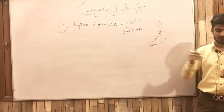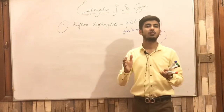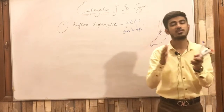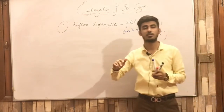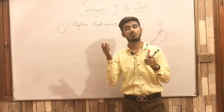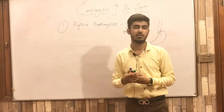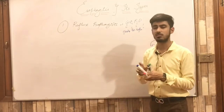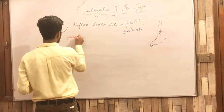Before discussing the pathogenesis, there is one more important point: there are submucosal glands in the esophagus, which are more prominent in the proximal and distal parts. These glands produce mucin and bicarbonate, which help in the protection of the esophageal mucosa. Now, what is the pathogenesis of reflux esophagitis?